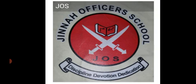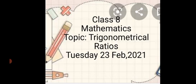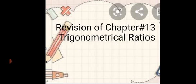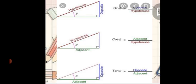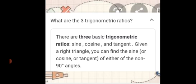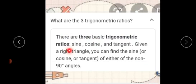Bismillahirrahmanirrahim. Welcome to JOS online classes students. Now it's time for math. Today our topic is trigonometric ratios. We will revise chapter number 13. First of all, we discuss about the trigonometric ratios. There are three basic trigonometric ratios: sine, cosine, and tangent. Given a right angle triangle,